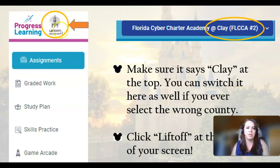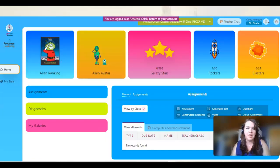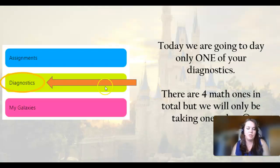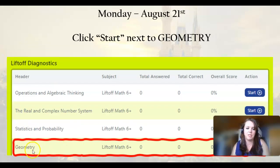Then once you're in Progress Learning, you're going to go all the way up to the top left, and there is a grayed out rocket ship that says Liftoff, and you are going to press Liftoff, and it should look like this — it should be the brightest color. In here, we're going to do our diagnostic. You're going to click into your diagnostic, which is that lime green button, and the last one we're going to do is the geometry one.